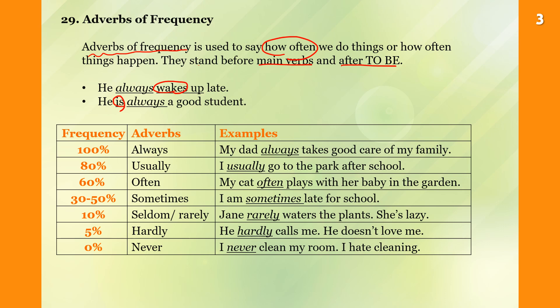'He is always a good student.' Frequency 100% — always. For example: 'My dad always takes good care of my family.' And 80% — usually.